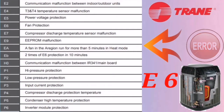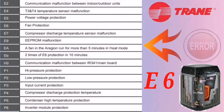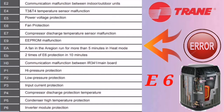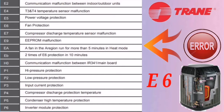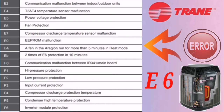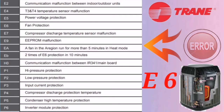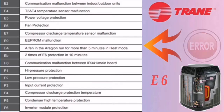The next error code is E6, which means fan protection. First, check the resistance of the fan motor — if the resistance is not okay, the fan motor is faulty and needs to be replaced. Then check if there is any obstruction at the fan air outlet and clear it properly. Also check if the fan blade is broken, as a broken blade can disbalance the rotation of the fan motor. Finally, check the output supply coming from the outdoor PCB to the motor to ensure it is good.